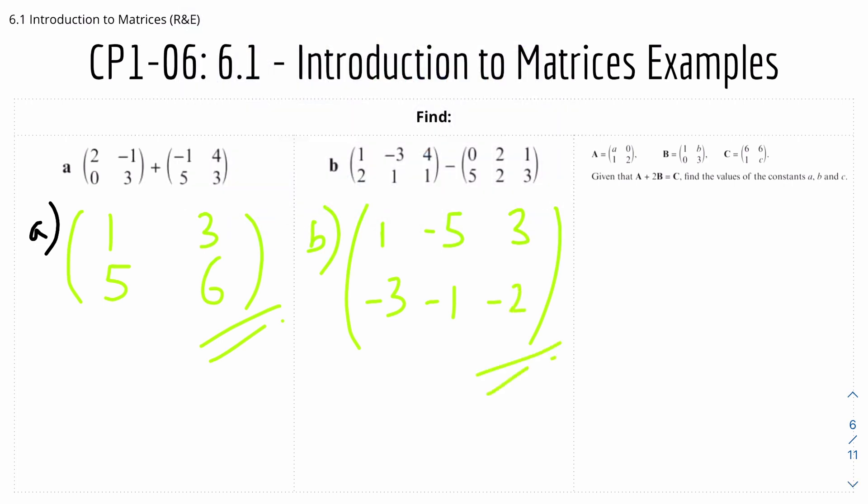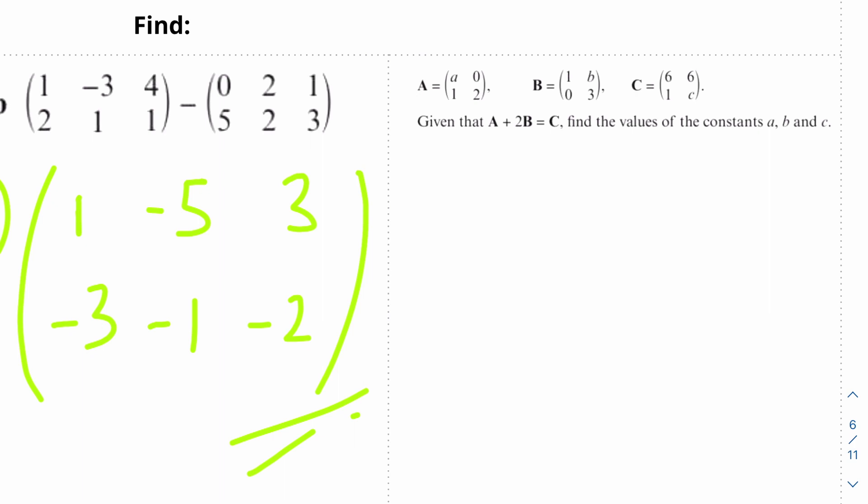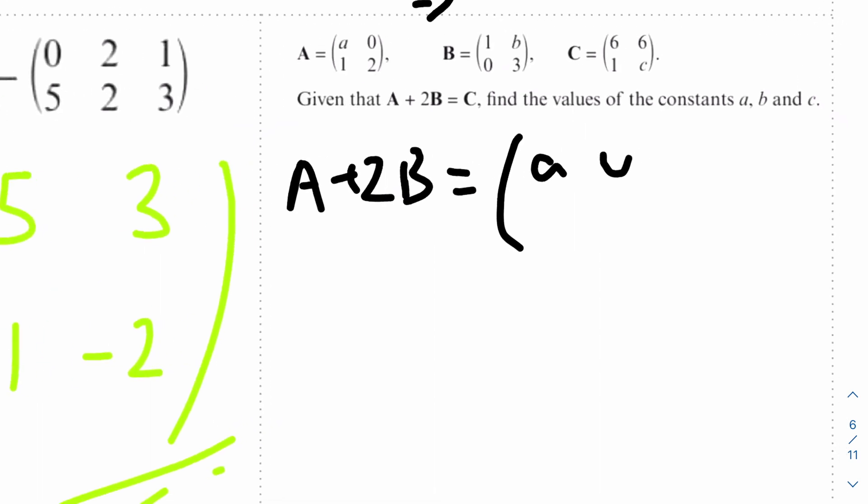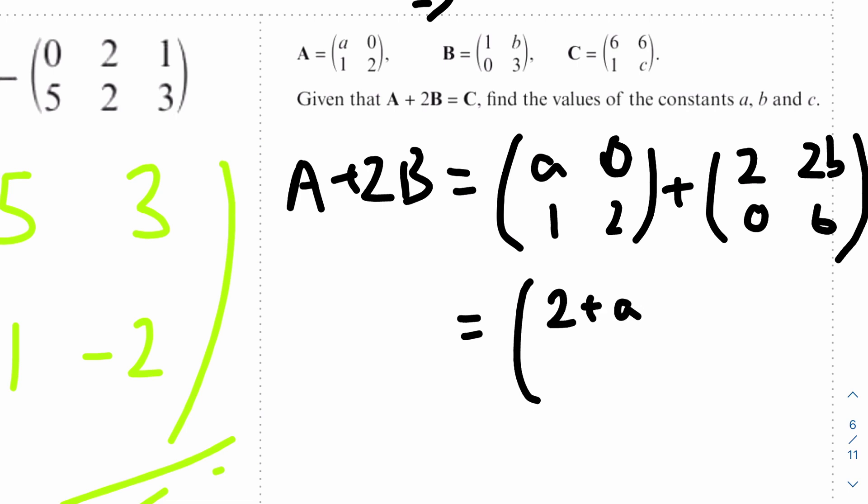And a more trickier example. So we're given a, b, and c and they are all 2 by 2 matrices. Given that a plus 2b equals c, find the values of the constants a, b, and c. So let's first find the left hand side of a plus 2b. So 2b, we know that to find out 2b we know that the scalar is 2, so we multiply 2 by every element in this case. So a plus 2b will be equal to a, 0, 1, 2, 1, 2 plus 2b is 2, 2b, 0, 6. So adding that up, we'll get us 2 plus a, 2b, 1, and 8.